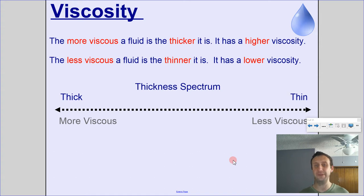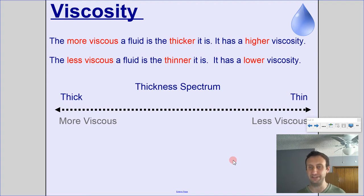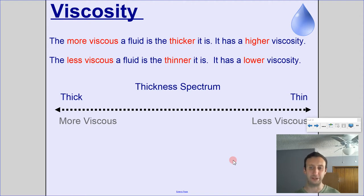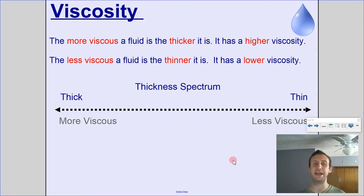You can think of 'viscous' as meaning thick. Higher viscosity means higher thickness. If a fluid is less viscous, it's thinner and has lower viscosity — it's runnier. So more viscous means higher viscosity and thicker; less viscous means lower viscosity and thinner.